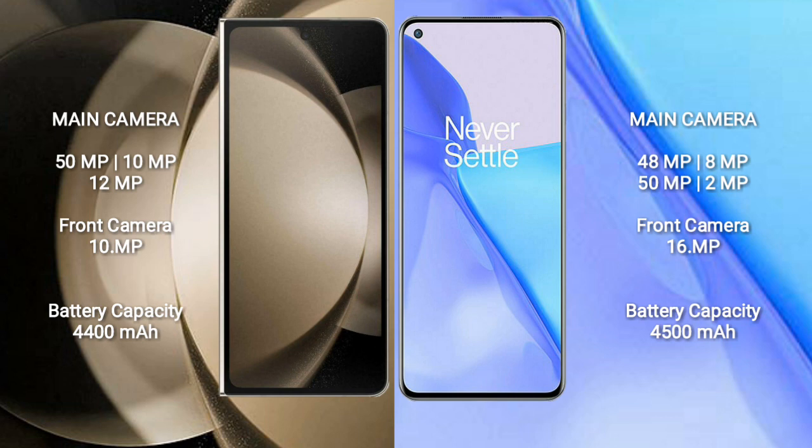Samsung Galaxy Z Fold 5 has a 4400mAh battery with 25W fast charging support. OnePlus 9 has a 4500mAh battery with 65W fast charging support.